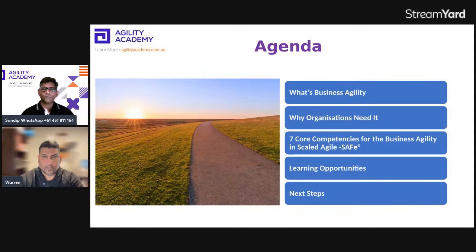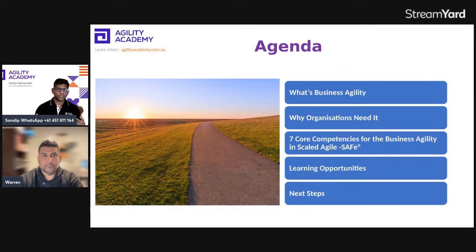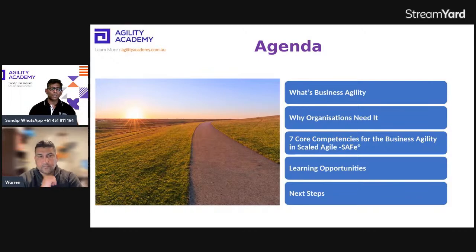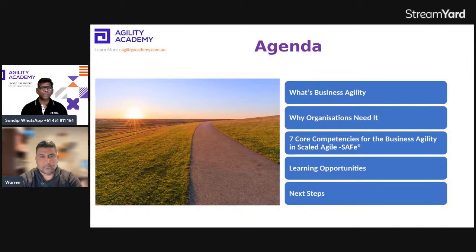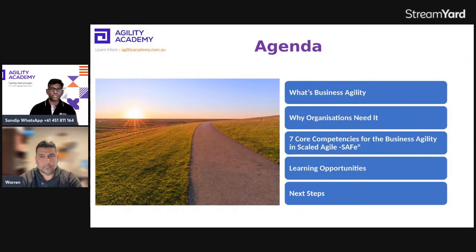This is the agenda for today. We are going to explore what is business agility — quite a buzzword nowadays you might have heard about in your organizations, in any meetup, in any leadership group, or on LinkedIn. Why is it important? Why do organizations need it? What does it take to have that capability within your organization? We'll explore that by looking at seven core competencies of business agility in the Scaled Agile SAFe framework.